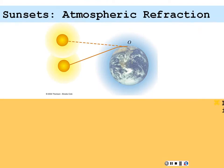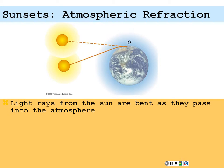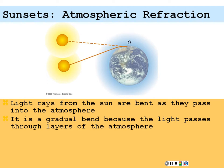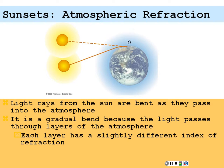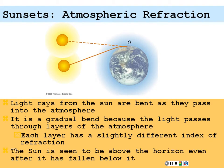Sunsets. Light rays from the sun are bent as they pass into the Earth's atmosphere. It's a gradual bend as the light passes through layers of the atmosphere. Near sunset, there's more atmosphere for the light to travel through, so there's going to be more refraction occurring. The light is bent such that the sun appears coming from a different direction — the sun can actually be below the horizon, already set, and you'll still see its image because the light from below the horizon has bent and made it to your eyes.